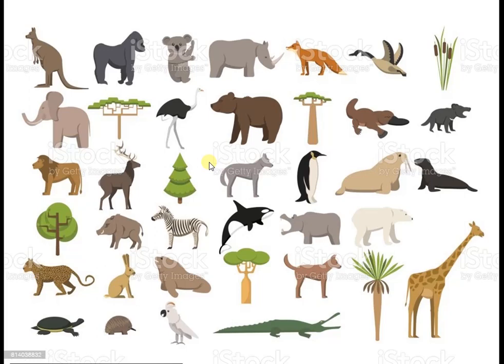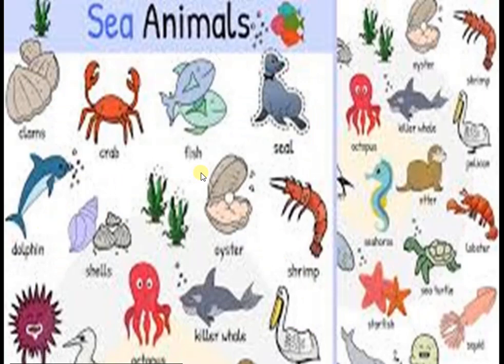Some examples of animals that live on the ground: Tiger, giraffe, elephant, etc. Some of the animals which live in water: Crab, fish, oyster, octopus, etc.